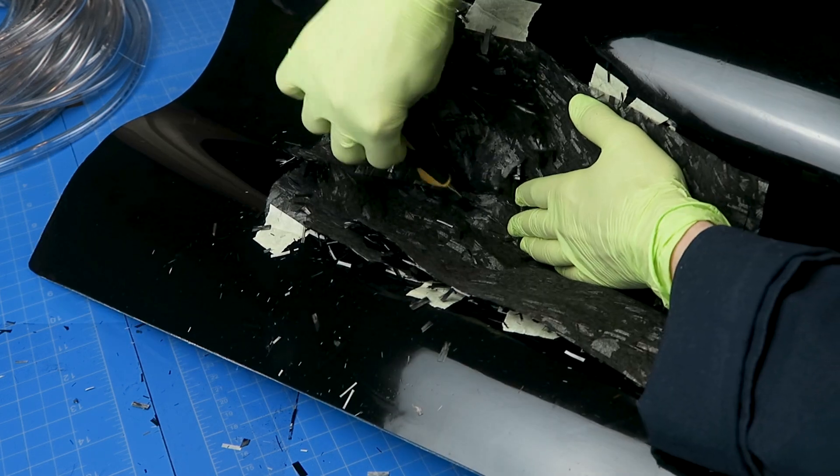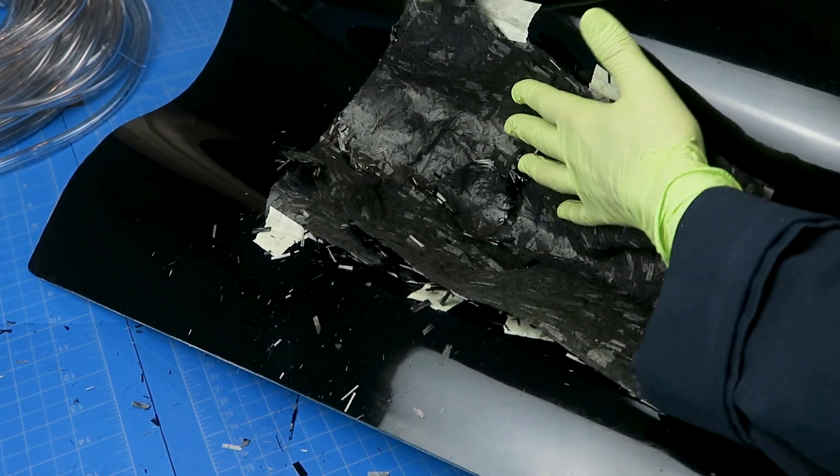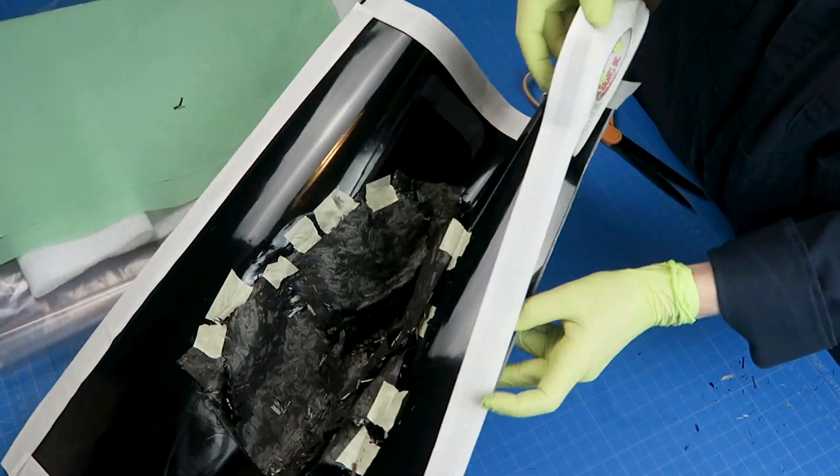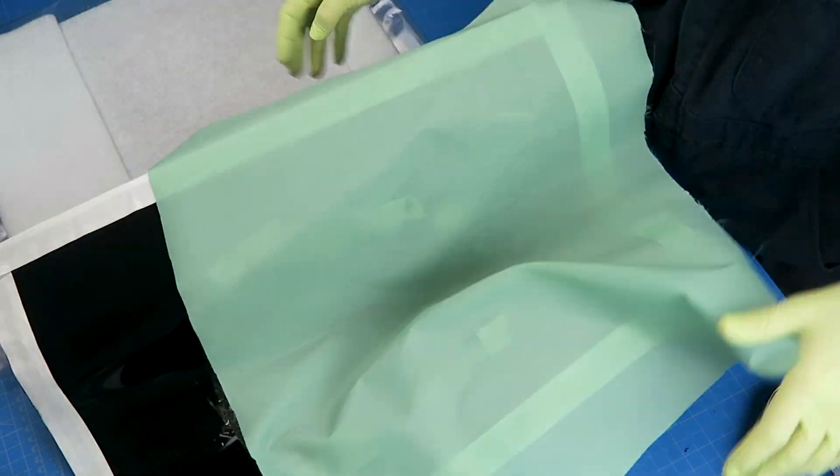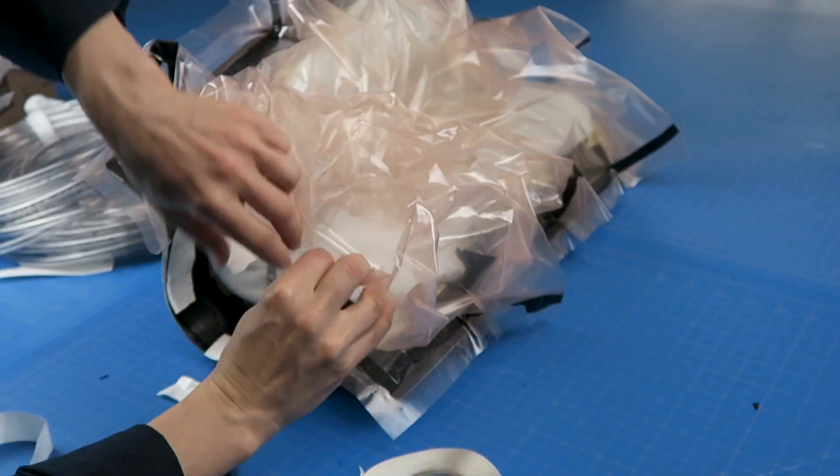Two layers were taped in place into the mold to keep them from shifting around. Then the release cloth and breather cloth were added on top of that and then that was bagged up for vacuum infusion.